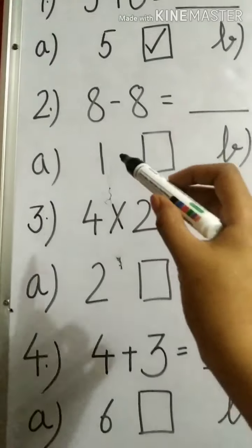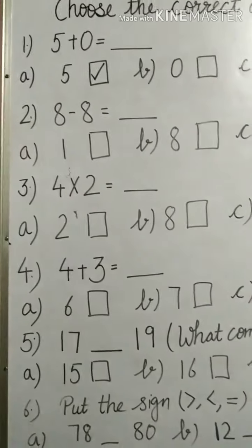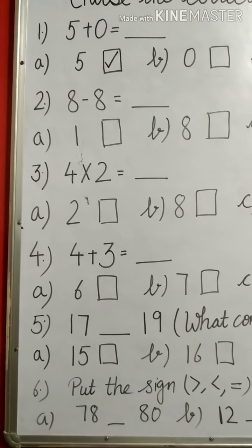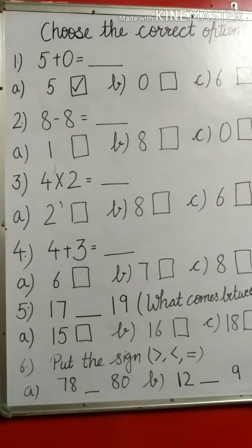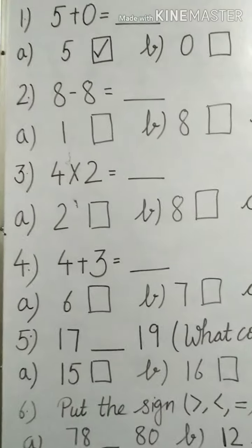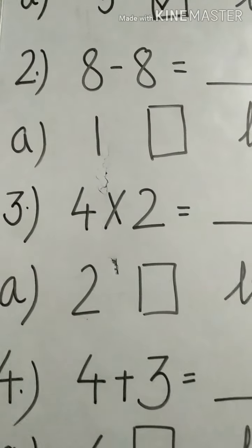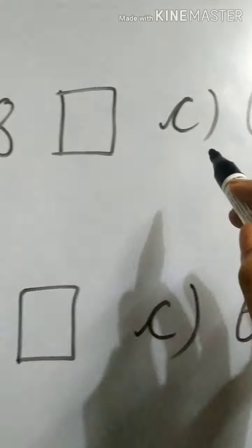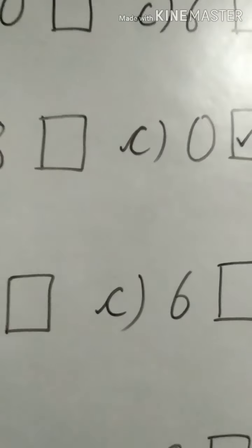Let's do the second one: 8 minus 8. Minus means subtraction. When we are subtracting the same numbers — imagine you have 8 toys and you give all 8 toys to your sister or brother, then how many toys are left with you? No toy, because you have given all 8 toys to that person. So when we subtract the same numbers, my answer becomes 0. In option A it is written 1, in option B it is written 8, and in option C it is written 0. So 0 is the correct answer and I will put a tick on option C.